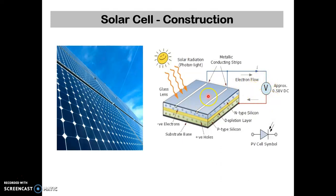If a load is connected across these two surfaces, the current starts flowing through it. The output of a solar cell is a DC voltage. Then we can convert this DC voltage to AC for general use with the help of an inverter. Here you can see the symbol of a PV cell also.